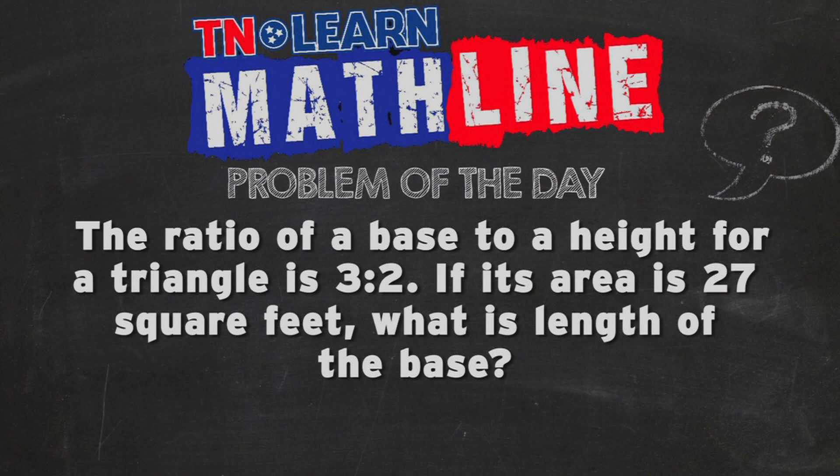Again, the ratio of a base to a height for a triangle is 3 to 2. If the area is 27 square feet, what will be the length of the base? And while we're at it, we'll find the height also. So let's see what this is all about.